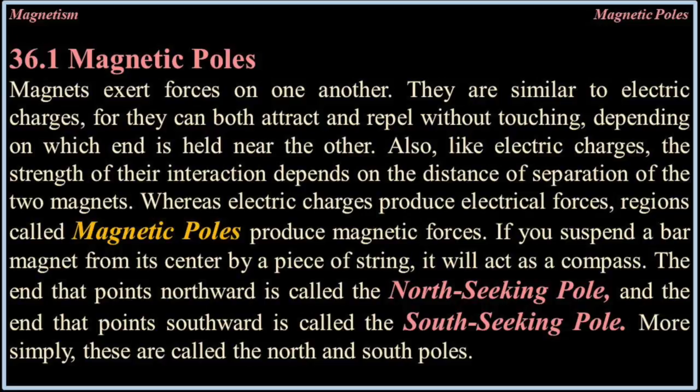If you suspend a bar magnet from its center by a piece of string, it will act as a compass. The end that points northward is called the north-seeking pole, and the end that points southward is the south-seeking pole. More simply, these are called the north and south poles.